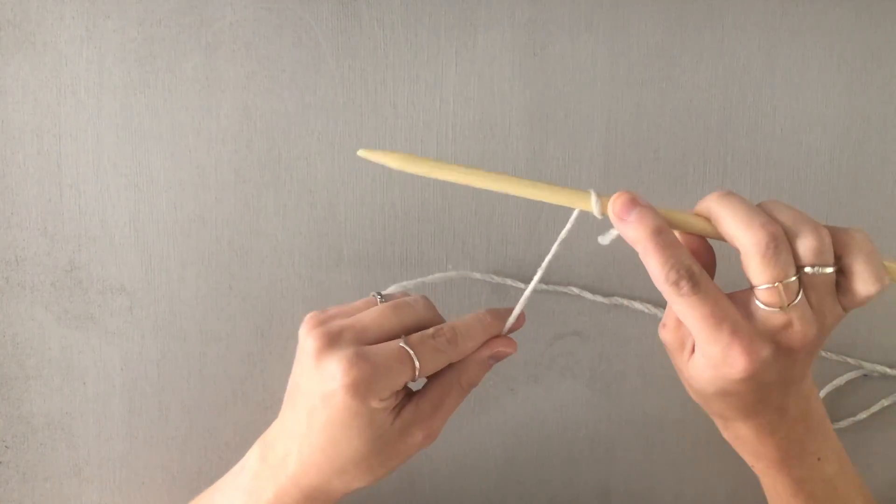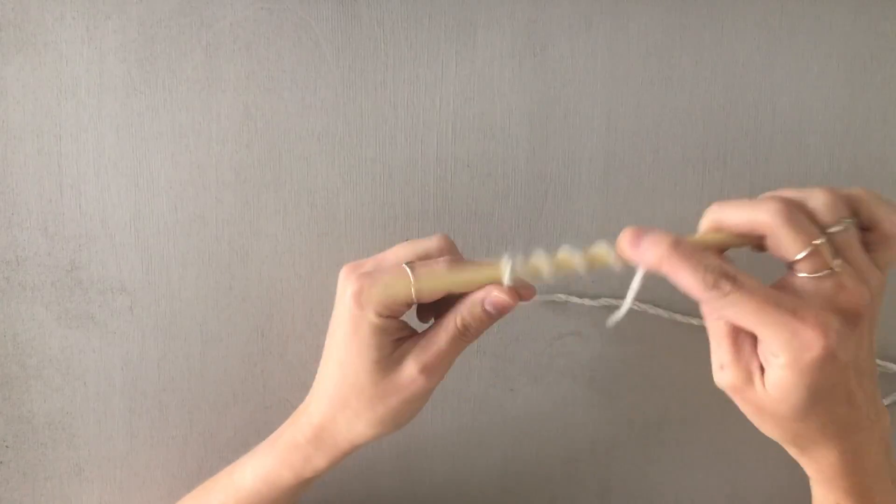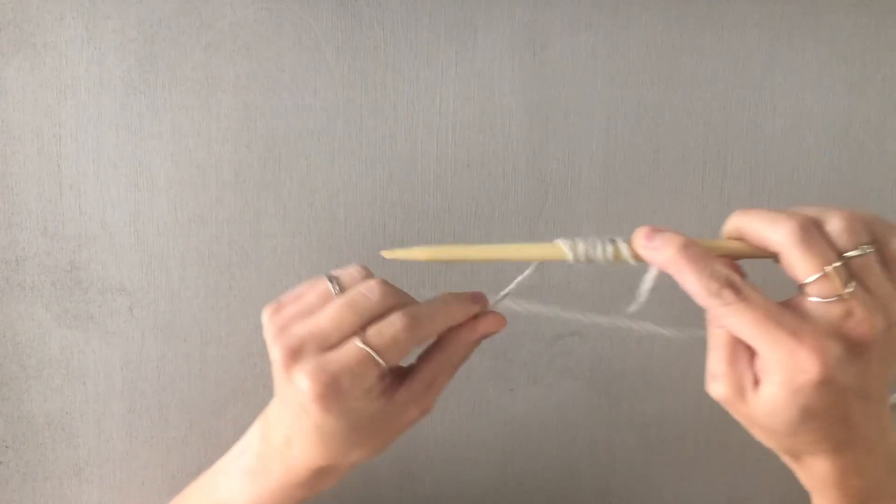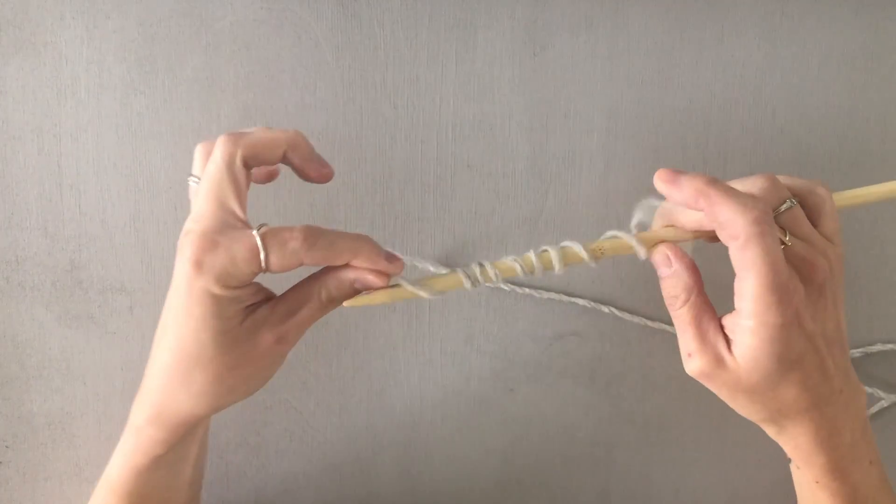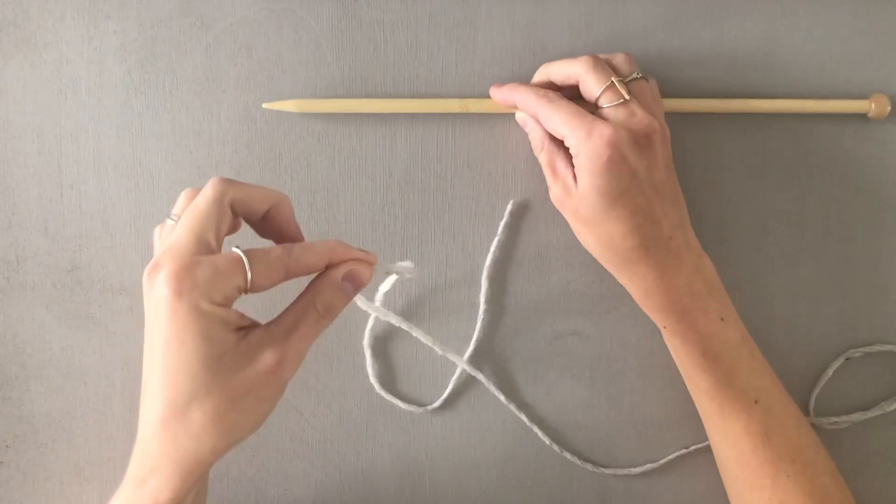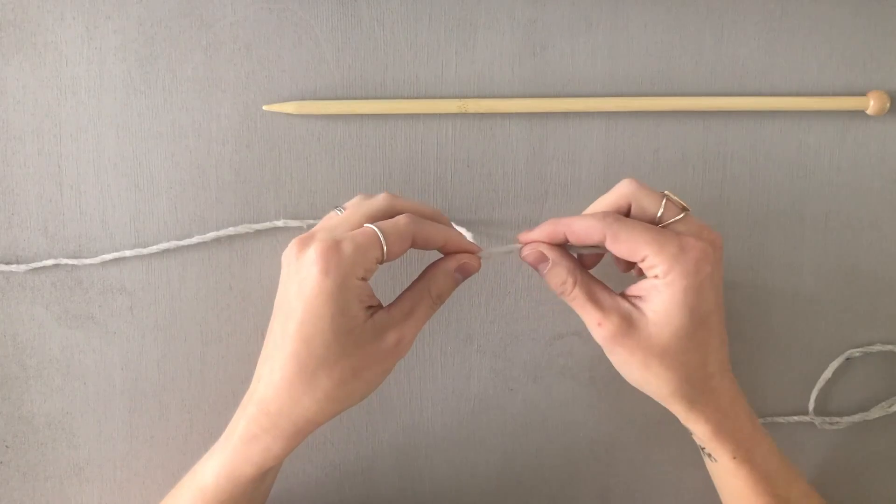So let's do ten. One, two, three, four, five, six, seven, eight, nine, ten. Let that fall off and I like to add just a little extra and this is where I'll make my slip knot.